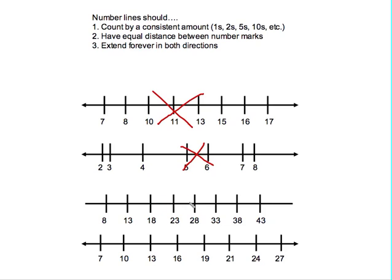It even looks like the distance is consistent, but my problem here is that there are no arrows. It's saying that numbers begin at 8 and end at 43. If we add the arrows, this one could be a pretty good example.